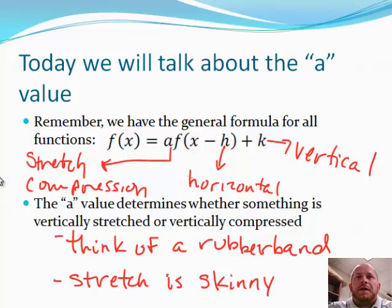So today we're going to talk about the A value. That's going to be your stretch and compression. Remember when we have the general formula for all the functions, these are your different parts. Your A is going to be your stretch and compression. Your horizontal is going to be your h, that's your left to right movement. And your k is your vertical, which is your up and down.